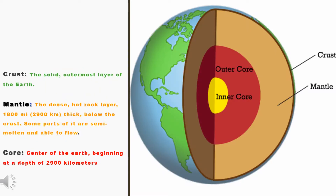The image in front of you is the structure of the Earth, and you have seen this before because in Grade 8 we did look at the structure of the Earth. We are just going to quickly recap these terms. The crust is the layer that we live on — it is the outermost part of the Earth. Then we have the mantle, which is the thickest layer, and this is where you have the semi-molten material. The core is the center of the Earth.